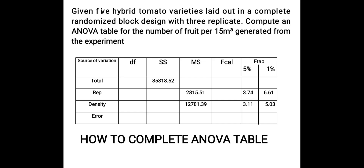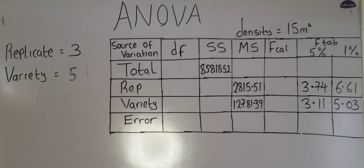In today's class, we are going to learn how to complete an ANOVA table. We are looking at the question on the screen: given five hybrid tomato varieties laid out in a complete randomized block design with three replicates, compute an ANOVA table for the numbers of fruits per 15 meters squared generated from the experiment. We are given some values on this table, and we are asked to complete the table by filling in the missing values. Let's complete this ANOVA table.